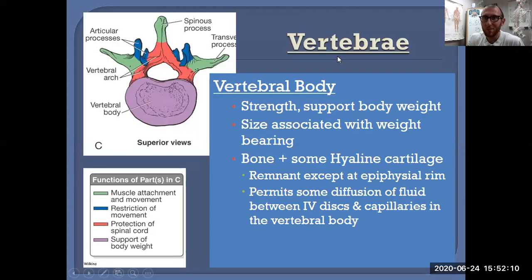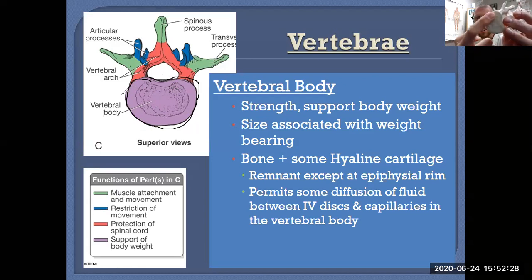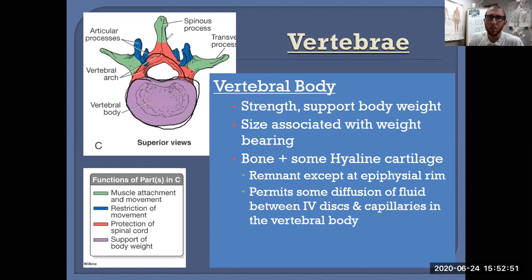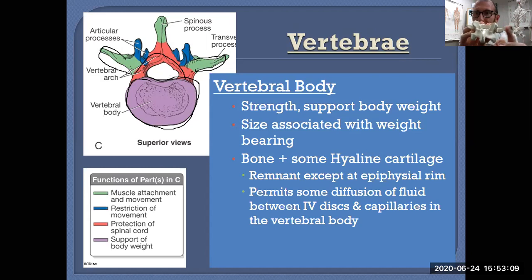First, let's talk about similarities. Almost all vertebrae have a vertebral body — the large part that takes the brunt of the force or body weight. That's the vertebral body shown in purple. We also have the vertebral arch, which is a combination of parts with processes coming off it. Processes coming off to the sides are transverse processes, extending laterally.